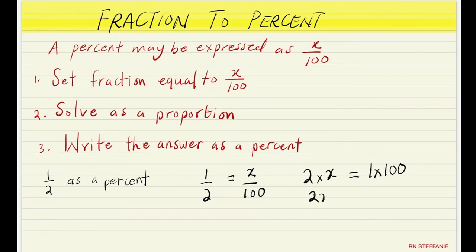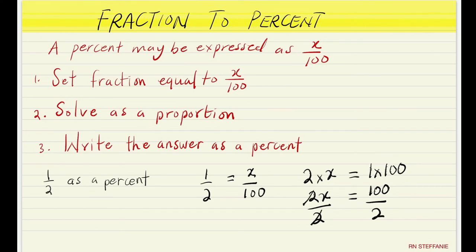That gives us 2x equals 100. We want x to stand by itself, so we divide both sides by the number in front of x, which is 2. Dividing both sides by 2: 2 goes into itself once on each side, and 2 goes into 100 fifty times, so x equals 50. Then we add the percent sign, meaning 1 over 2 as a percentage is 50%.